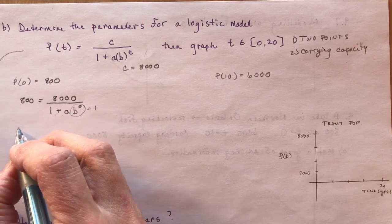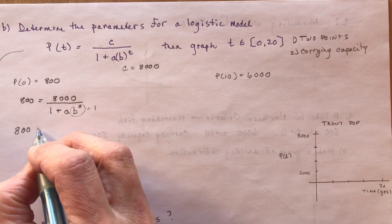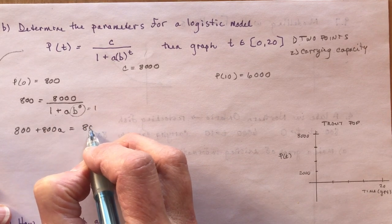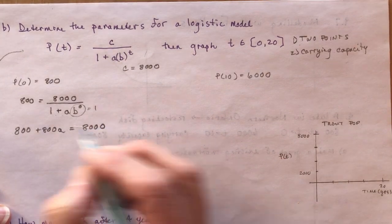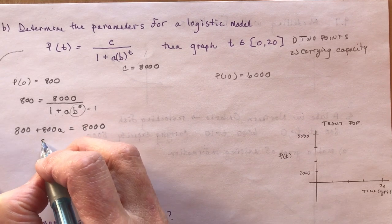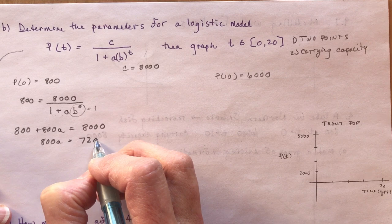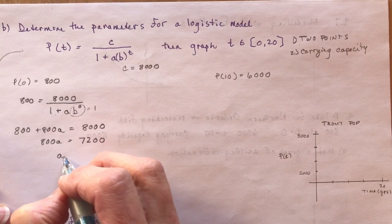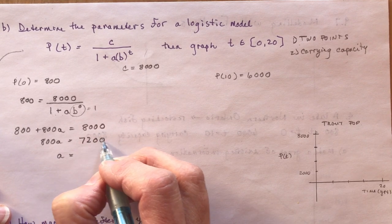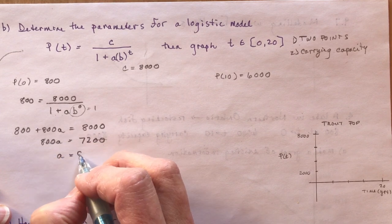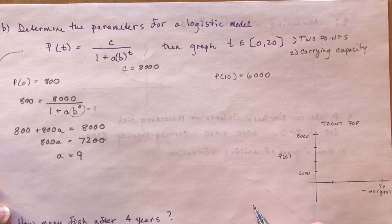So cross-multiplying here would give me 800 plus 800A equals 8,000. I subtract 800 on both sides, I get 800A equals 7,200. And I divide by 800, and that gives me A equals 9.